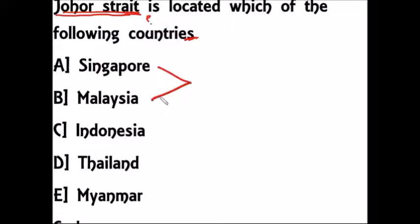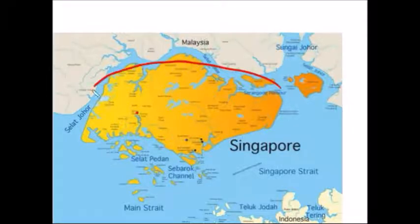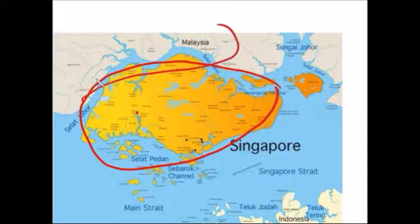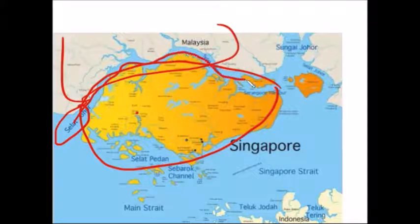It is located between Singapore and Malaysia. In this image, the yellow color shows Singapore and above that Malaysia is located. Between these two countries the Jogar Strait passes.